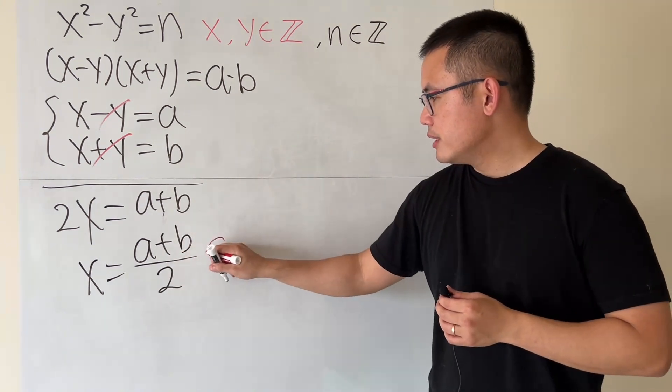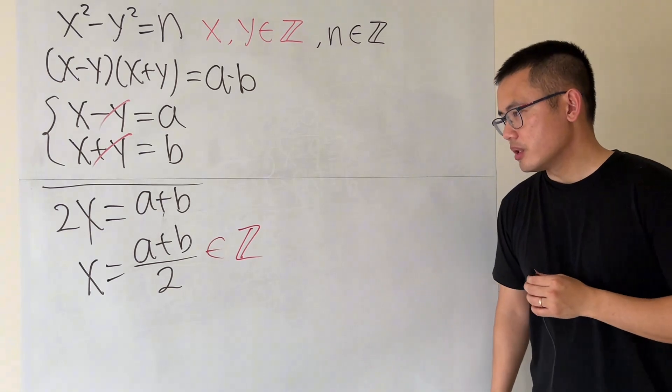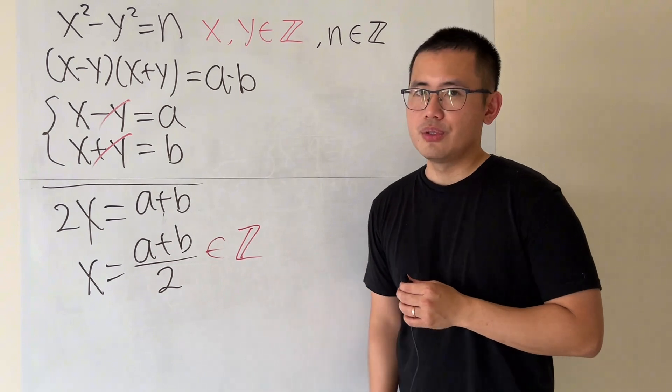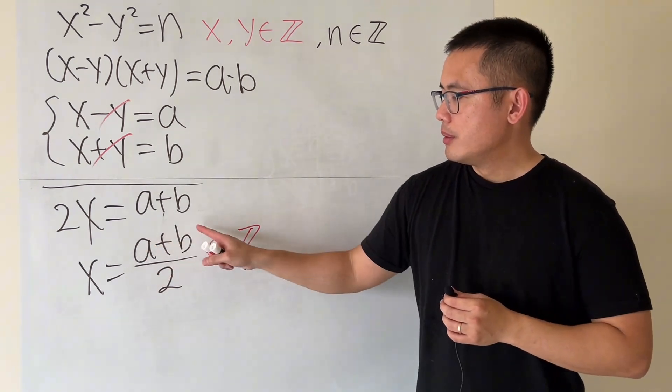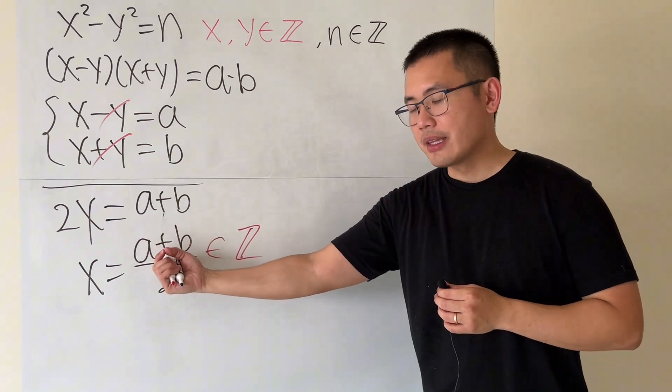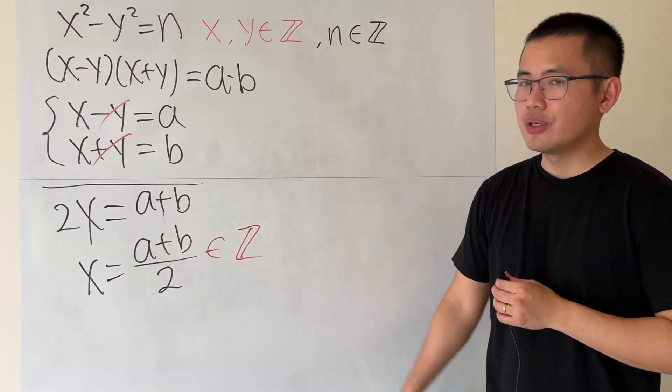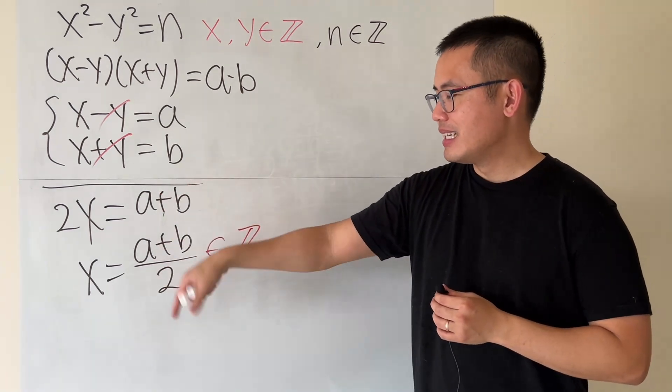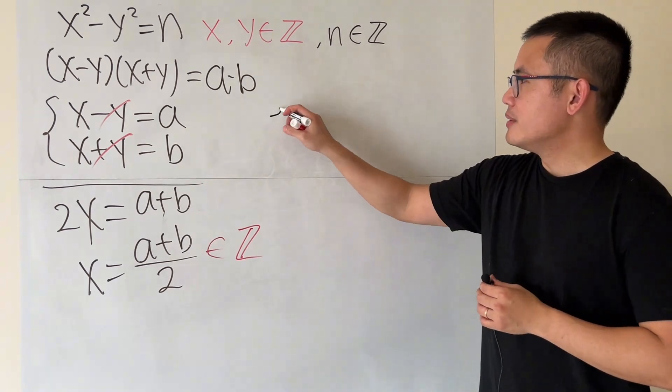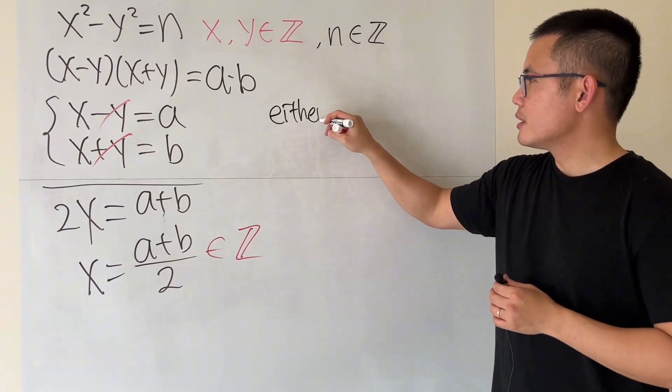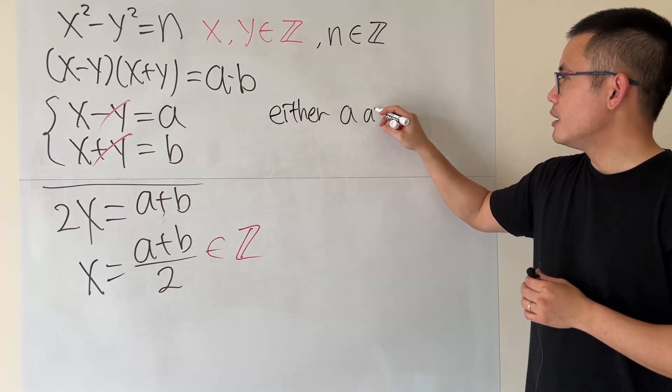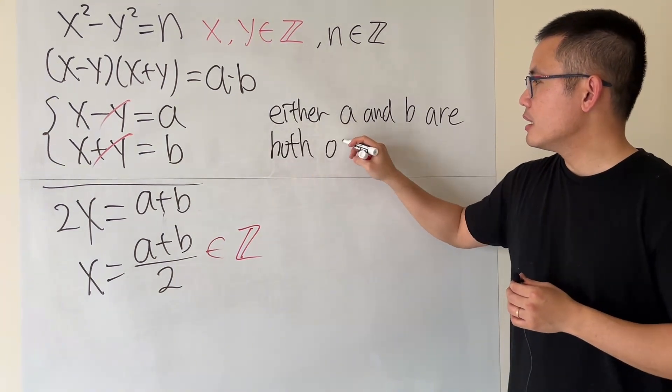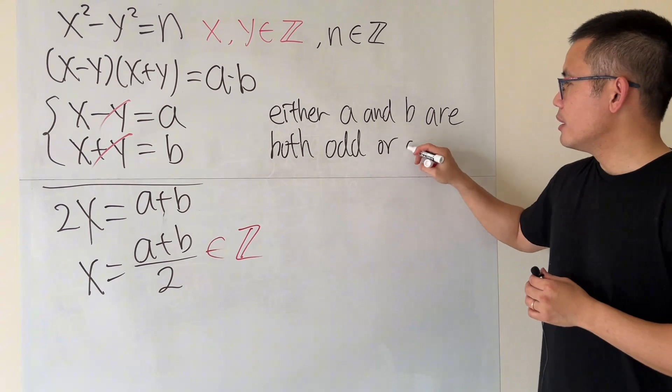Now, in order for this to end up to be an integer, we will have to think about the following. What plus what divided by 2 is an integer? Well, either we have two odd numbers, because the sum of two odd numbers is even, divided by 2, then we get integer, or we have two even numbers, and when we divide it by, that's still going to be that. So either a and b are both odd, or both even.